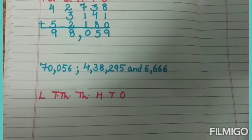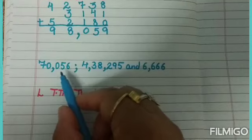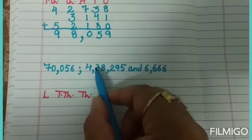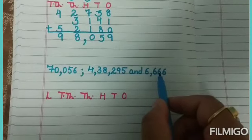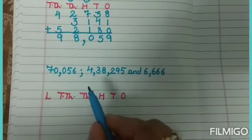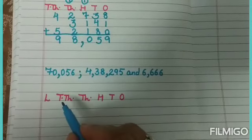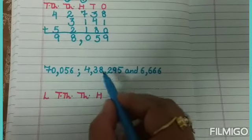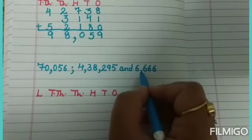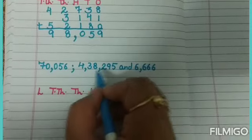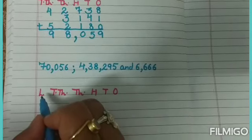One more example. The three numerals are: 70,056; 4,38,295; and 6,666. You have to write the places. The maximum number of digits here are 5, 6, and 4, so maximum is six digits. For six digits, you write up to lakhs place.